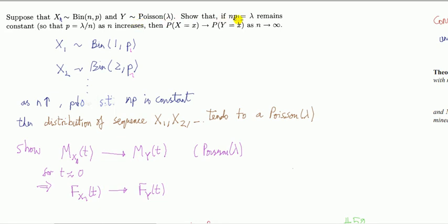Being this condition here. This is saying as n gets bigger and bigger, P falls towards 0 in such a way that the product of n times P remains constant. That's calling it lambda.